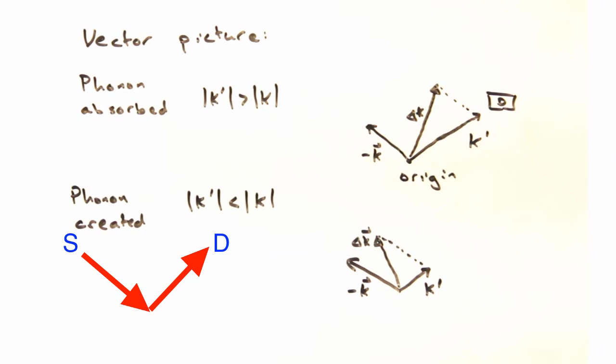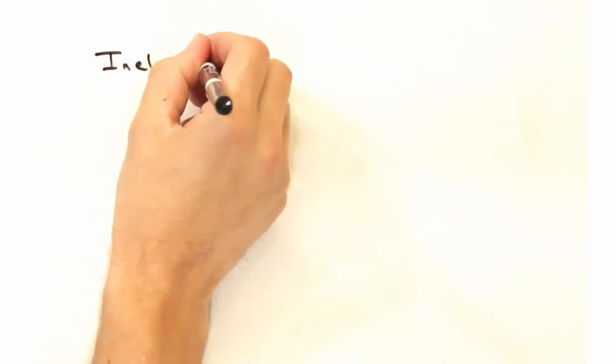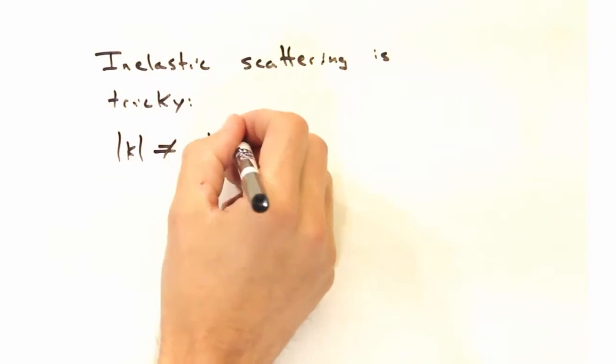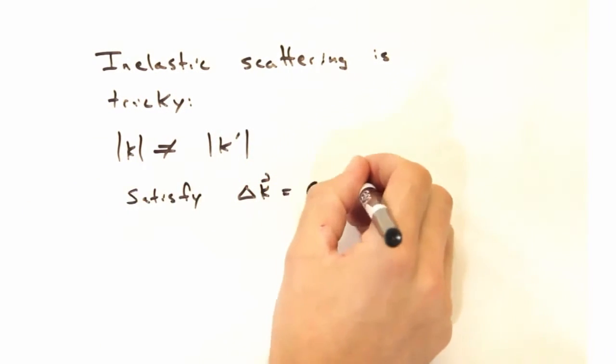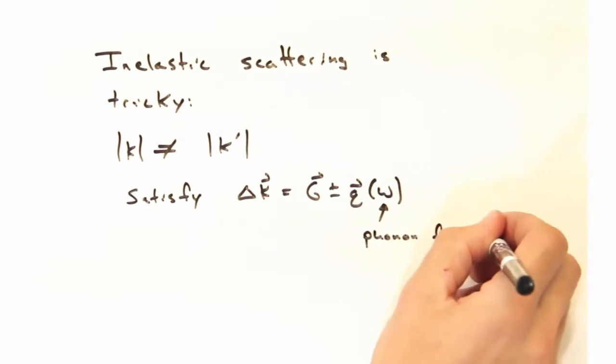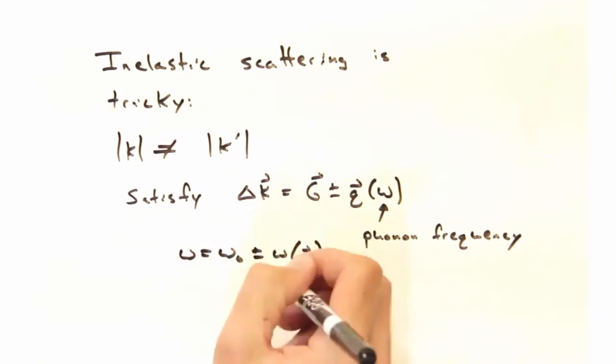So if you had a given source and a detector position, you can see that depending on whether or not you're creating or absorbing phonons, you could potentially be sampling two different points in reciprocal space, and that's just for a single type of phonon being created or destroyed. So inelastic scattering is really pretty tricky. The magnitude of k is not going to equal the magnitude of k prime, although in some cases we approximate it as such. And generally we're going to have to think about satisfying this delta k equals g plus or minus q criteria. Finally, we have to make sure that the final frequency equals the initial frequency plus or minus the frequency of the phonon. If this wasn't such a neat technique that gave us so much information, I don't think we'd bother going through all of this. But from inelastic scattering, we can get so much information that it's really worth the struggle.